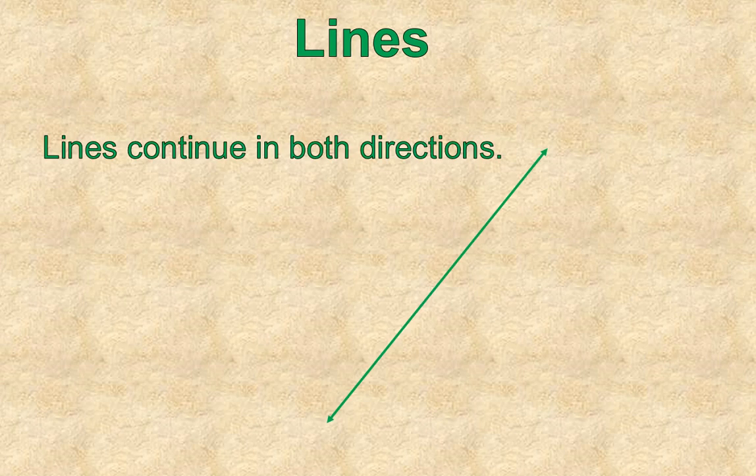Rays are a little different than lines. Lines continue in both directions. So when we represent a true line, we'll represent it with something that looks like this that has arrows in both directions. When we name it, we do put two points on it, but the points are not at the end. The points are just somewhere in the line. We could call this line, line GH, or we could call it HG. It doesn't matter because the line goes in both directions forever.